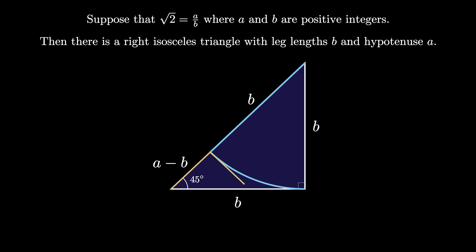Next, draw a perpendicular to that circular arc that intersects the lower leg. This line segment has created a new right triangle, and because one angle is 45 degrees, so is the other one. So this triangle is actually isosceles, which means that both legs have a length of a minus b. The line segment on the bottom side of the triangle connecting this intersection point to the other corner is another tangent to the circular arc, and that means it also has the same length of a minus b.